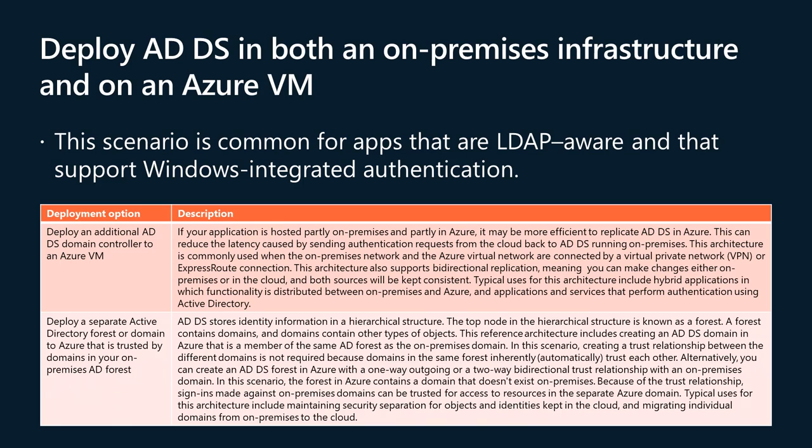When deploying ADDS in an on-premises environment and on an Azure VM, you can deploy an additional ADDS domain controller to an Azure VM. If your application is hosted partly on-premises and partly in Azure, it may be more efficient to replicate ADDS in Azure to reduce latency caused by sending authentication requests back to on-premises. This architecture is commonly used when the on-premises network and the Azure virtual network are connected by a VPN or ExpressRoute connection, supporting bi-directional replication so changes can be made either on-premises or in the cloud. Typical uses include hybrid applications and services that perform authentication using Active Directory.